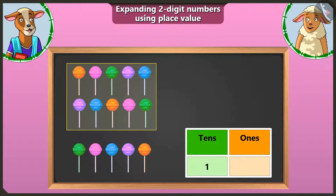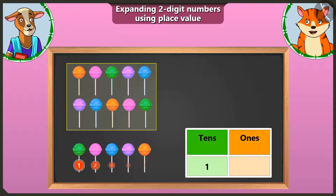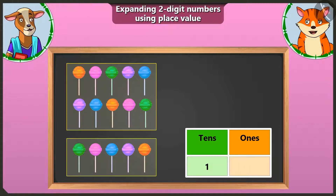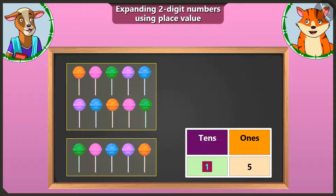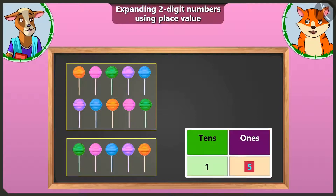Now tell me, Billy, besides the group of ten here, how many lollipops are left with which a group of ten cannot be made? Now see, there are one, two, three, four and five lollipops left with which a group of ten cannot be made. Yes, you are right, Billy. We will write the remaining five lollipops in the box of ones. One tens and five ones make the number fifteen. Well done, Billy.